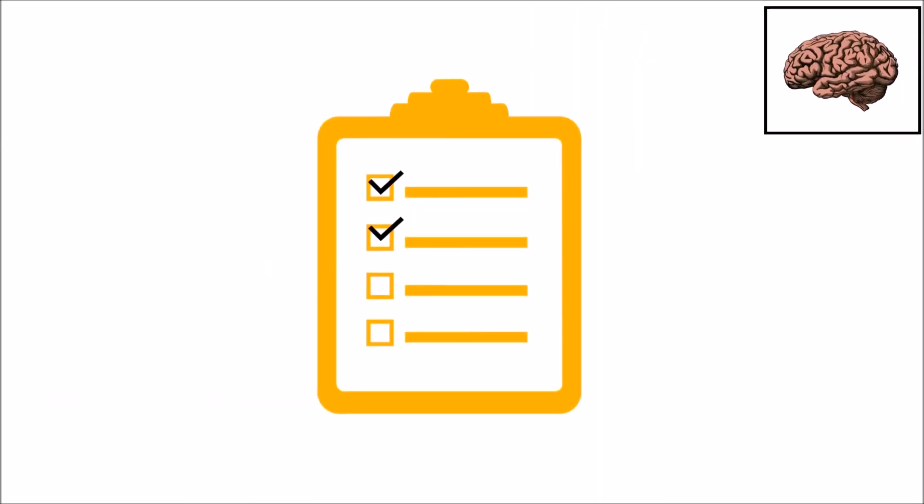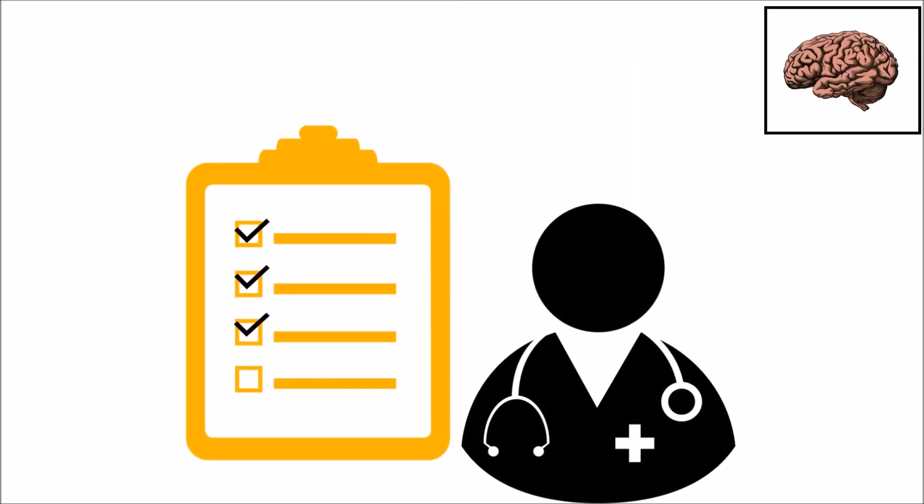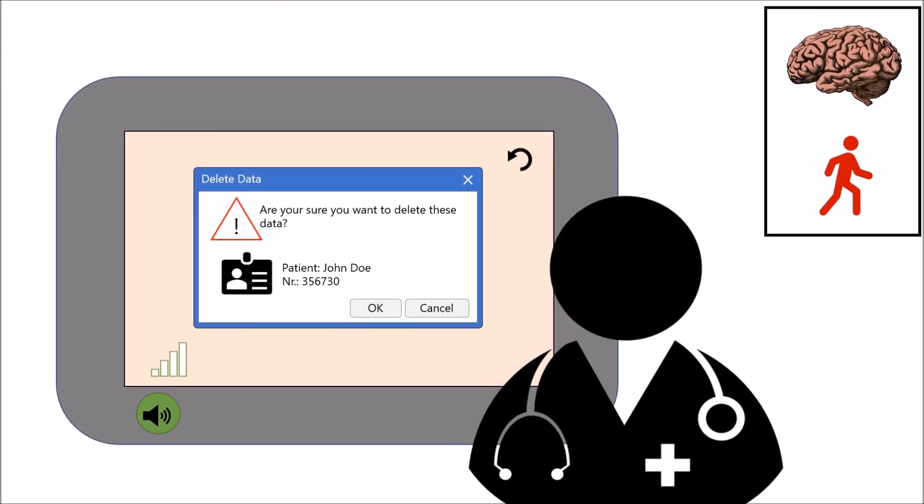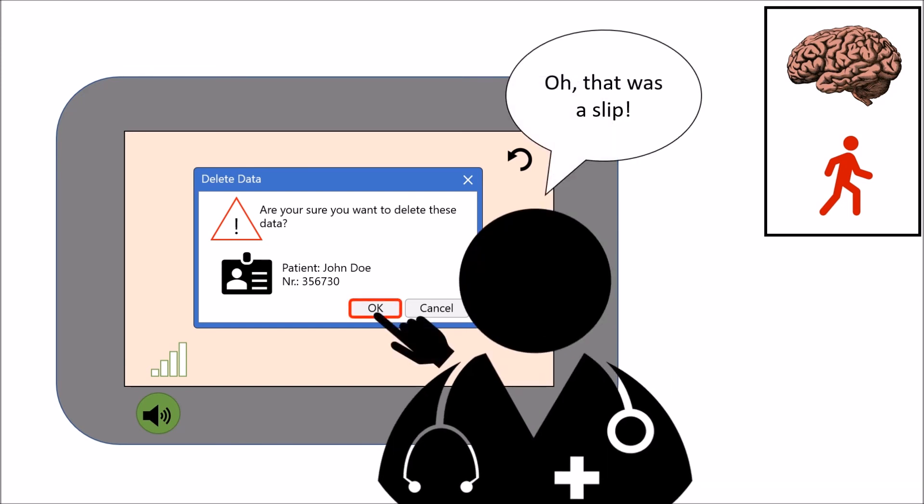Offer reminders. A checklist can work wonders against lapses. Another idea is to create error-tolerant systems against slips and cognitive mistakes by second confirmation of actions or undo possibilities.